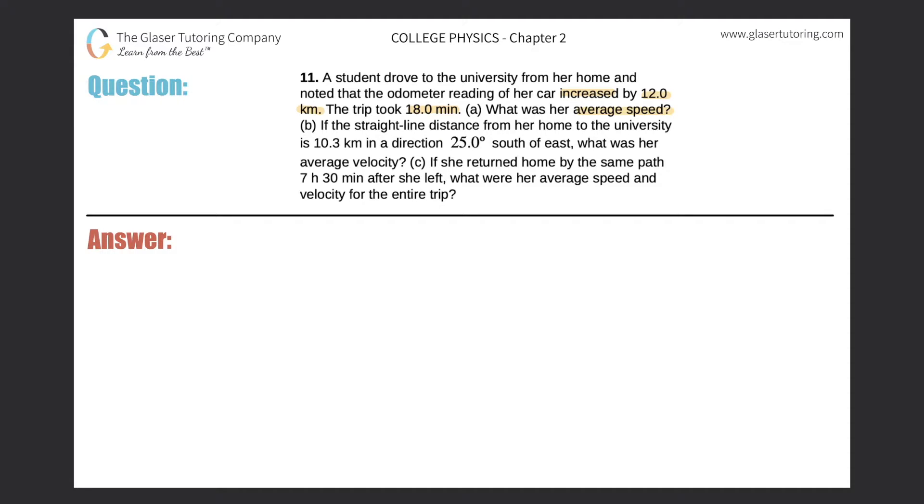Okay, so let's write down what we're given. The odometer reading increased by 12 kilometers, so that means the distance that she traveled during her trip was 12.0 kilometers. And it told us that the time in which it took her to drive these 12 kilometers was 18.0 minutes. So now it asks us what was her average speed, so we're looking for S.